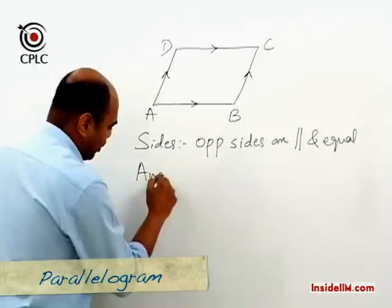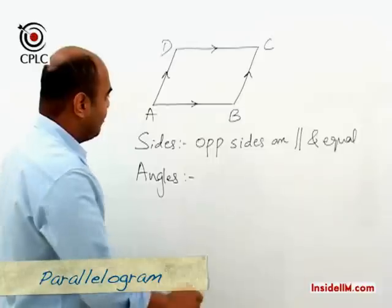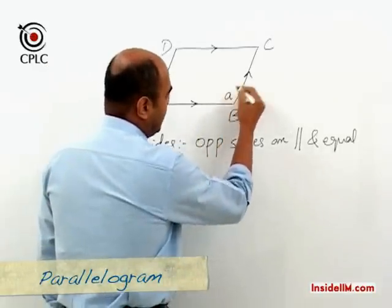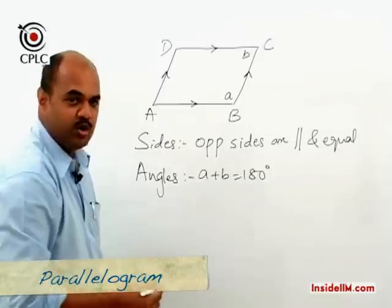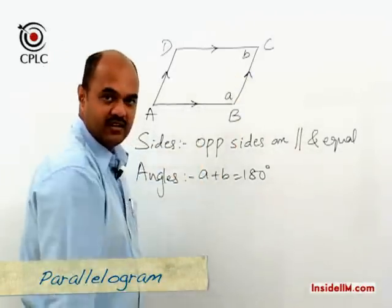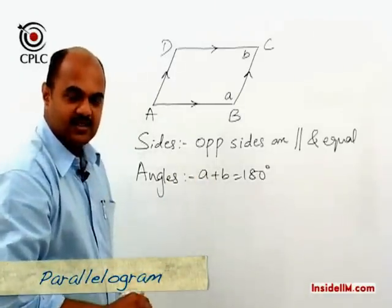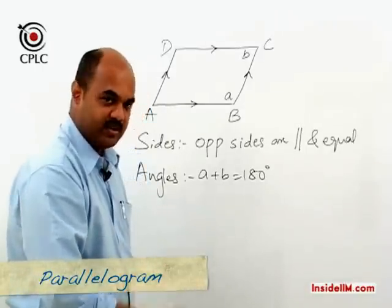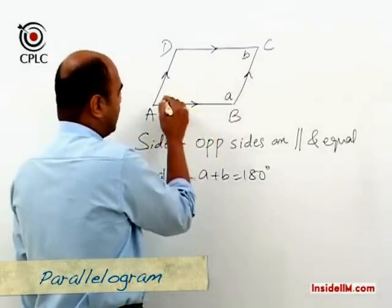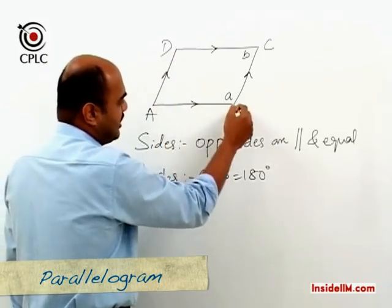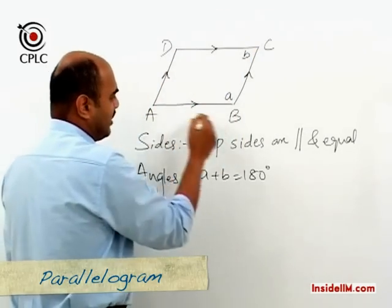Now let's look at properties with respect to angles. Since opposite sides are parallel, if we label the angles at A and B, then angle A plus angle B equals 180 degrees, because these are interior angles formed by parallel lines, and interior angles are supplementary. This generalizes to: adjacent angles in a parallelogram are supplementary. There is also another property: opposite angles are equal. So angle DAB equals angle DCB, and angle ADC equals angle ABC.